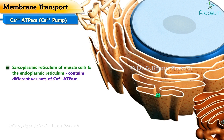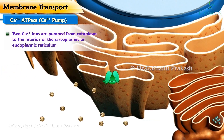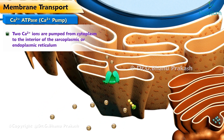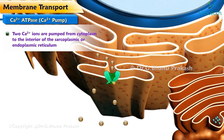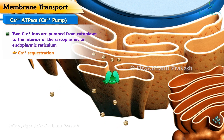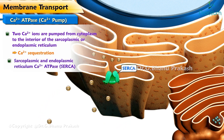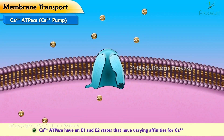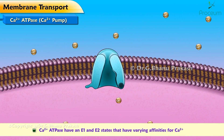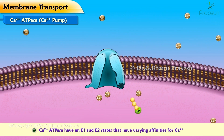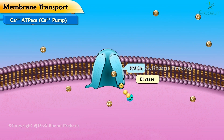The PMCA is found in the sarcoplasmic reticulum of muscle cells and the endoplasmic reticulum of other cells. These other cells contain different variants of calcium ATPase that pump two Ca2+ ions for each ATP hydrolyzed from the cytoplasm to the interior of the sarcoplasmic or endoplasmic reticulum — calcium sequestration. These variants are referred to as sarcoplasmic and endoplasmic reticulum calcium ATPase, or SERCA.